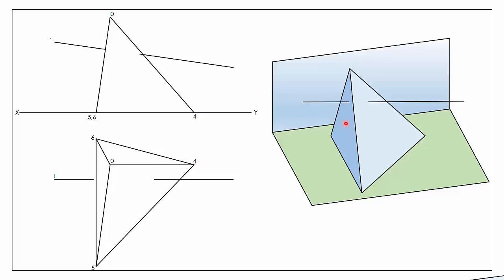The line is going to enter into our pyramid along this surface here and exit on this surface here. We'll find each of the two points separately. For the entry point on this surface, we identify the surface in our plan view — points 0, 6, and 5 — and we notice that we have an edge view of that surface up in our elevation. Where line 1 hits our edge view gives us the actual piercing point, which I'll call 1L. We simply project downwards and extend our line to find it in plan view. When we have an edge view of a surface it really simplifies finding our piercing points.